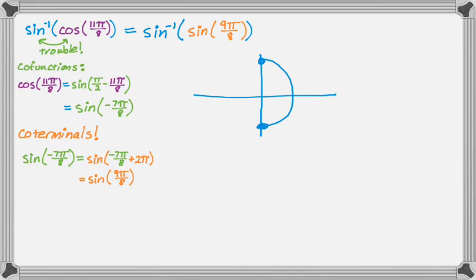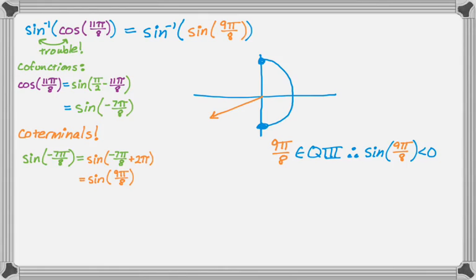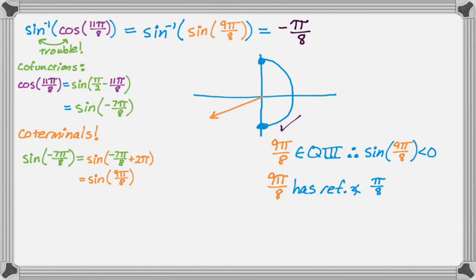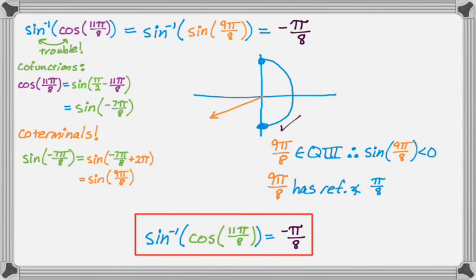Thinking of the part of the unit circle I'm allowed, 9π over 8 is just past π and is in quadrant 3. Therefore the sine of 9π over 8 is negative, so I'm looking for a quadrant 4 angle, since that's where sine is negative in the range of arc sine. The reference angle of 9π over 8 is π over 8, so the answer is negative π over 8. To summarize, the inverse sine of the cosine of 11π over 8 is negative π over 8. I hope you found this helpful — good luck.